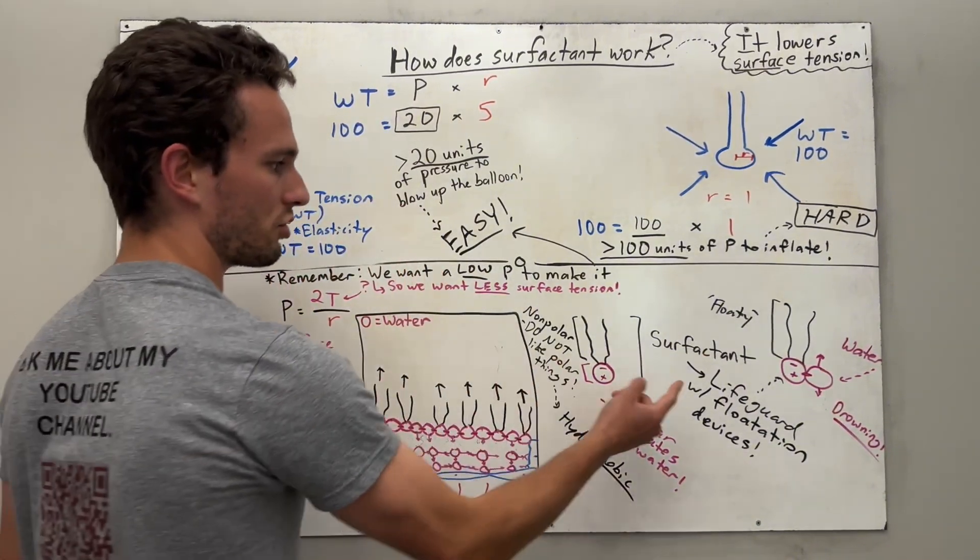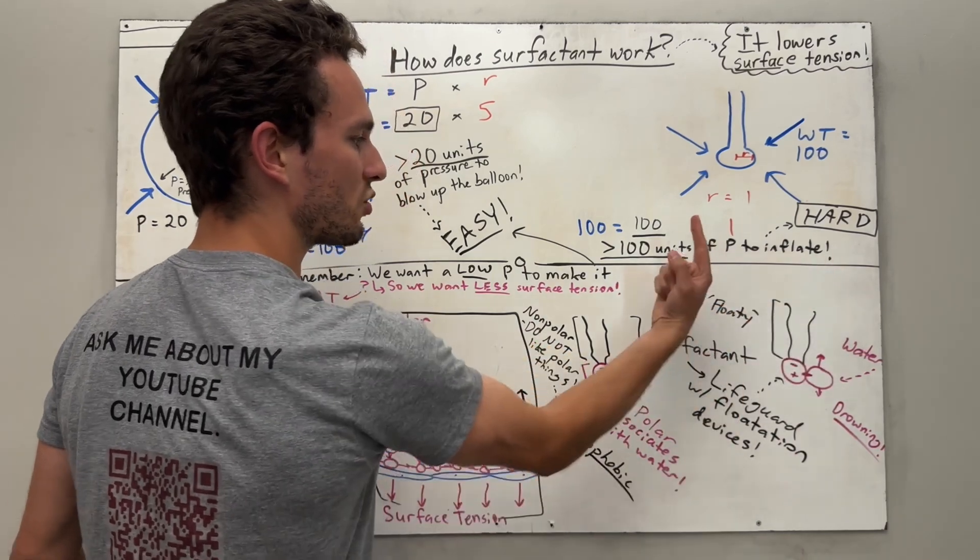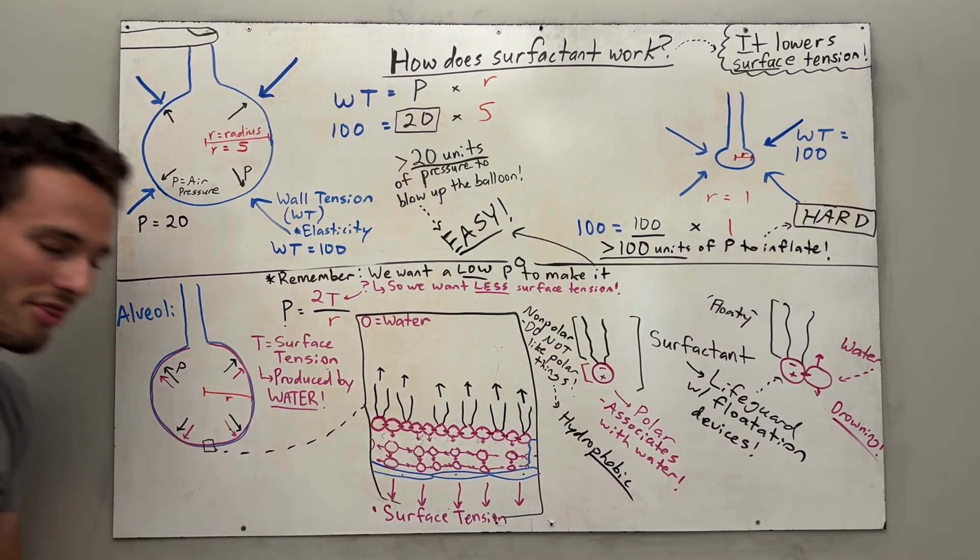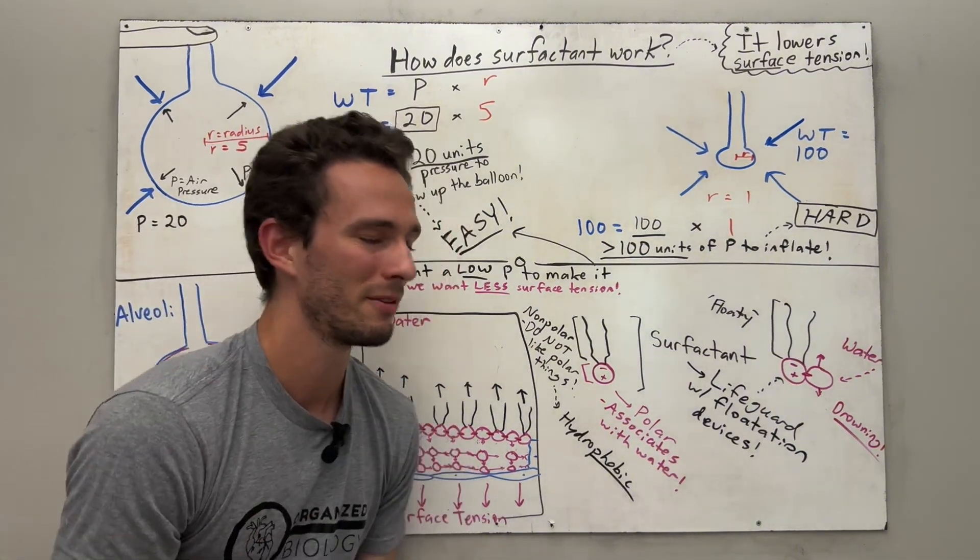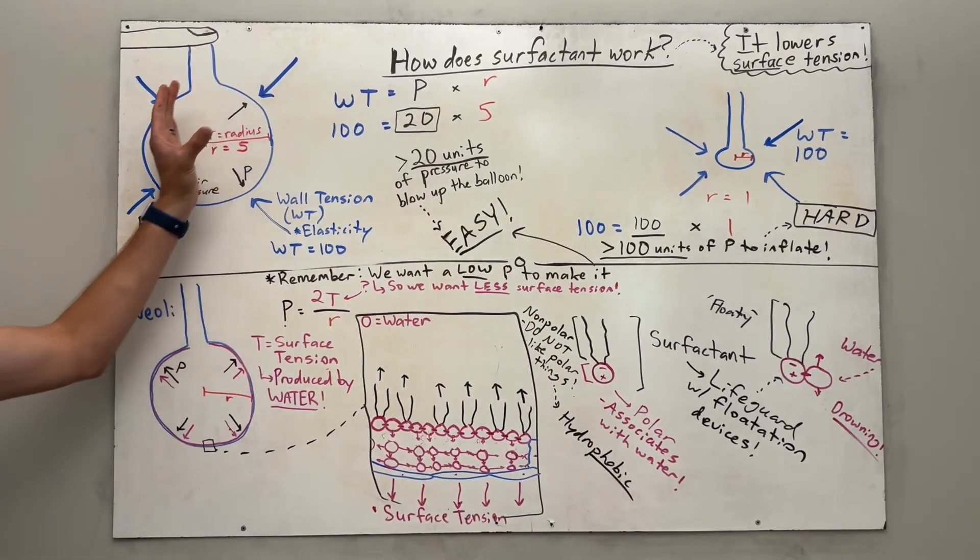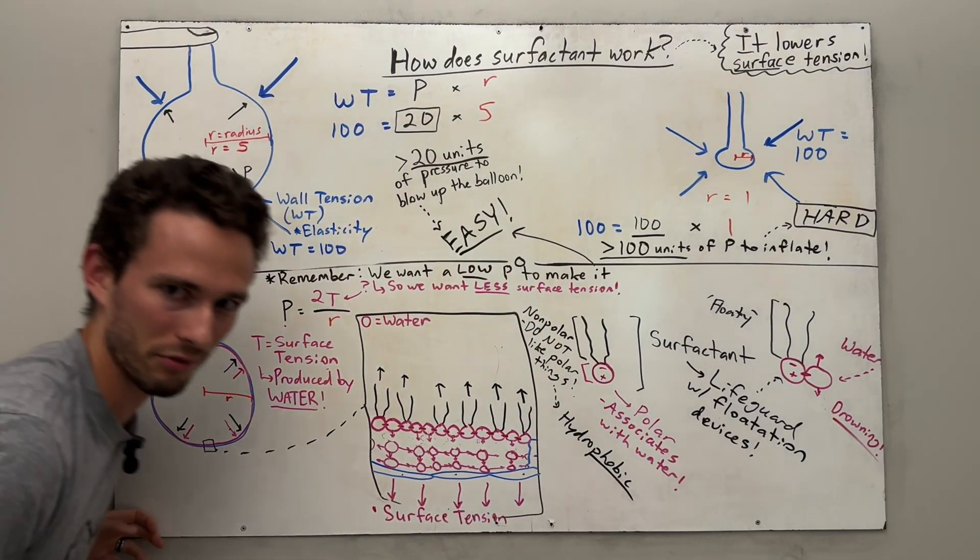So all in all, if surfactant helps pull the water this way, we decrease that surface tension, thus decreasing our pressure, thus making it easier, thus making it easier to inflate the balloons we call our alveoli.